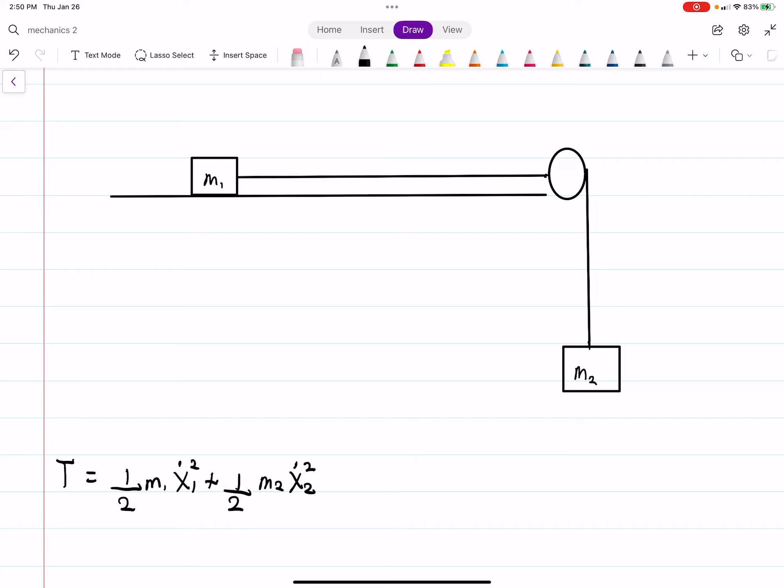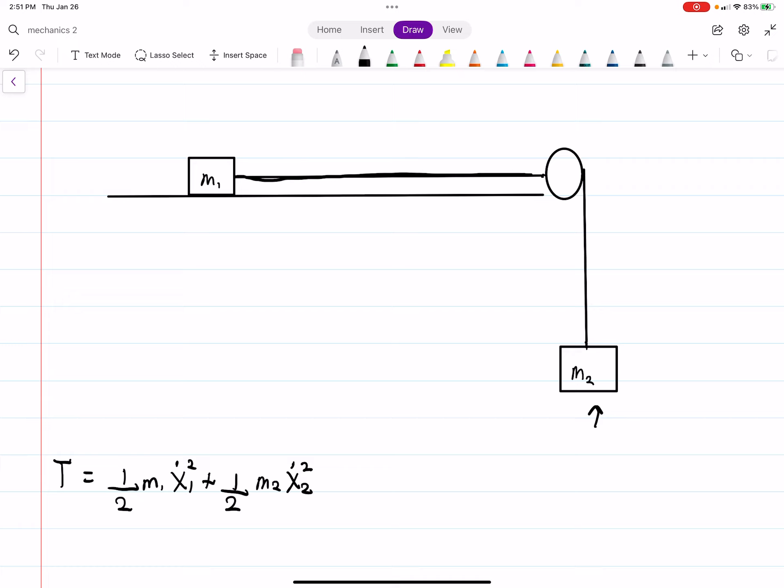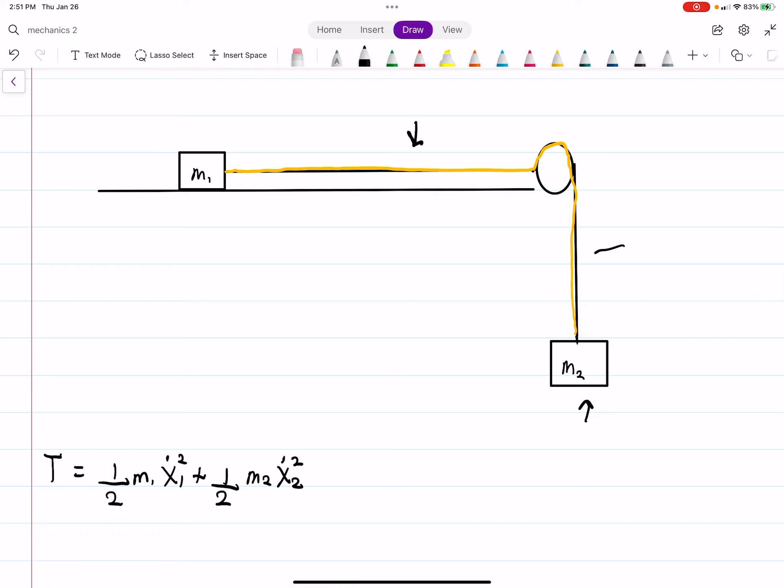We're saying they're going in the same direction, and we're thinking of it as if you took this pulley and lifted it up. This rope, because it's connected, I know it changes directions here, but because it's connected, any acceleration, any velocity, any change in position from here corresponds to a change here.